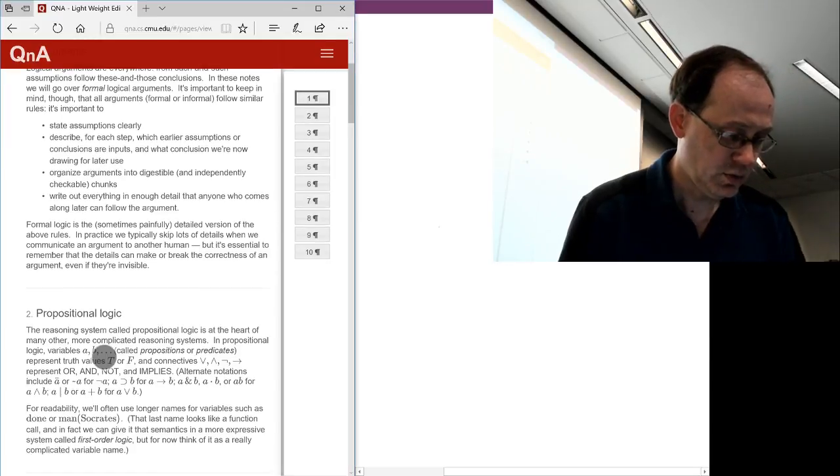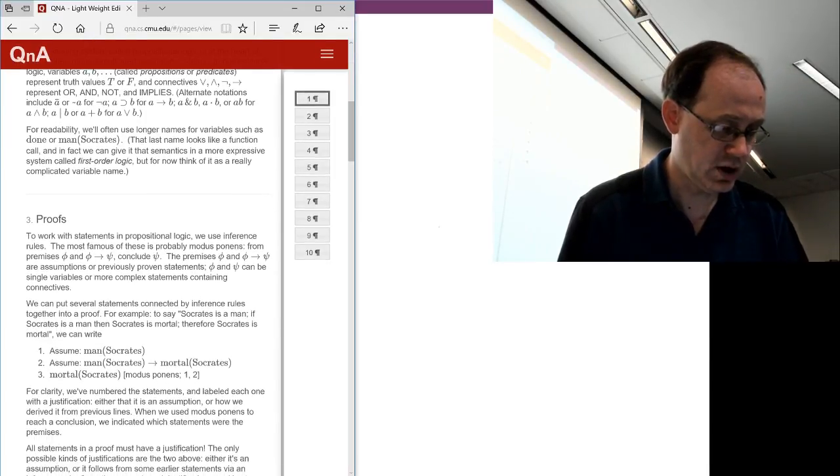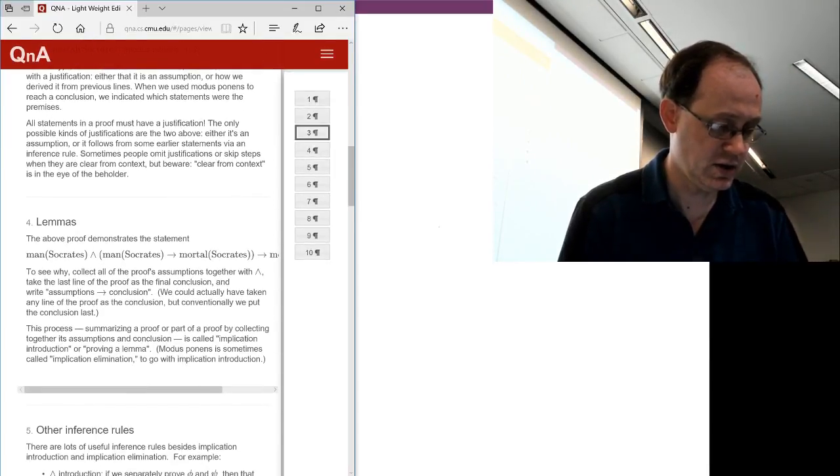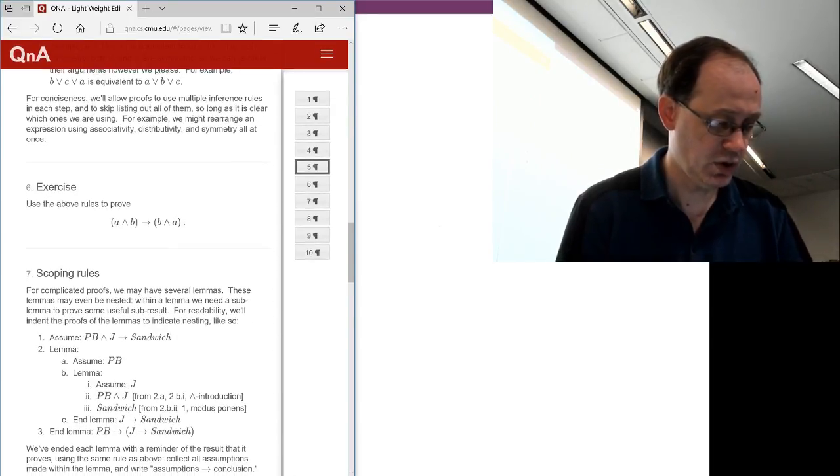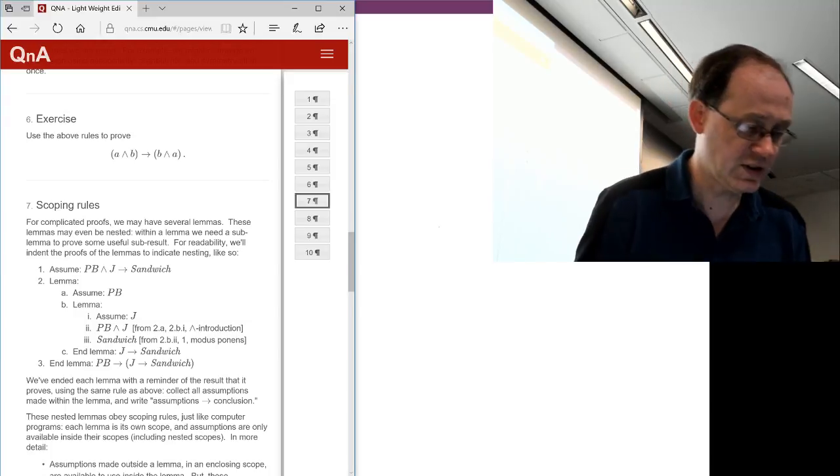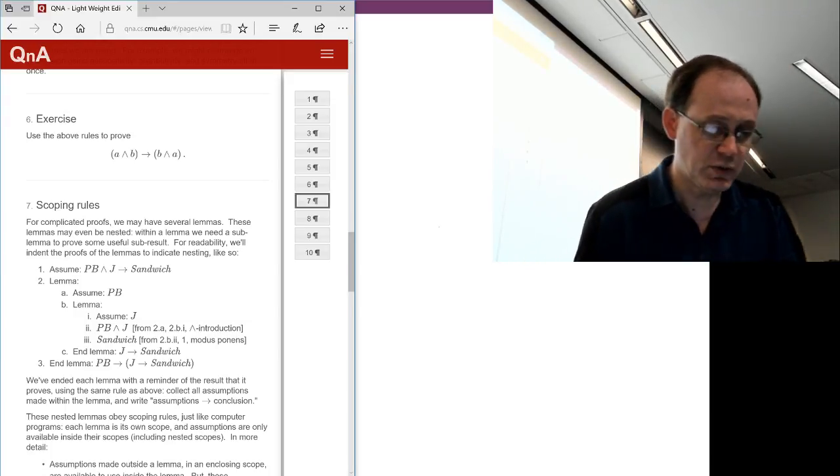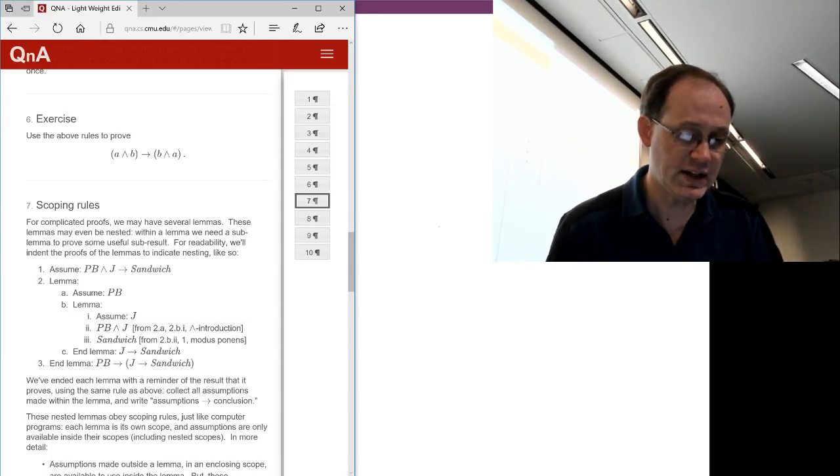The rules for the propositional logic are in this document, which we can review later. But we're going to do this exercise here in section 6 to prove that A and B implies B and A.